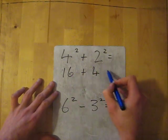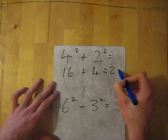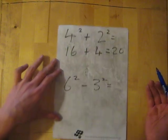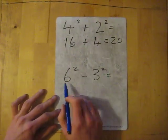Quite straightforward. So this one: 6 squared take away 3 squared. We do the 6 squared first which is 6 times 6 which is 36, take away...